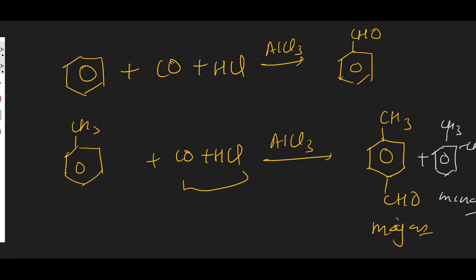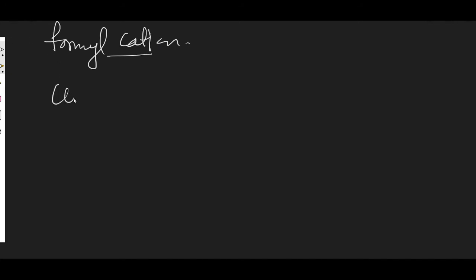Regarding the mechanism, the Gattermann-Koch reaction mechanism is uncertain, but we can think that a formyl cation is the intermediate. In the first step, carbon monoxide reacts with AlCl3. AlCl3 is an electron-deficient species, so it creates a bond with chlorine from HCl, forming AlCl4 negative and H positive (a proton).